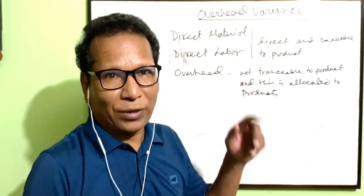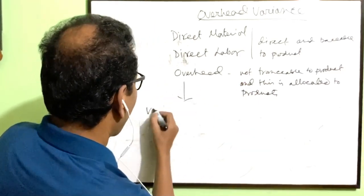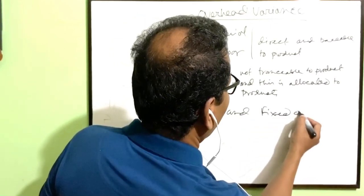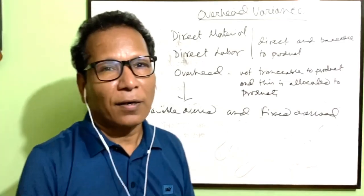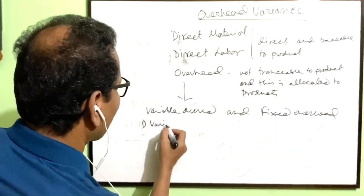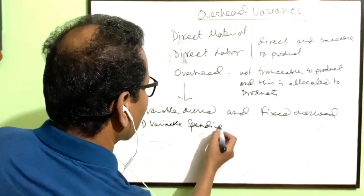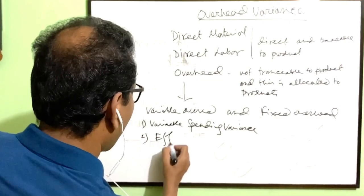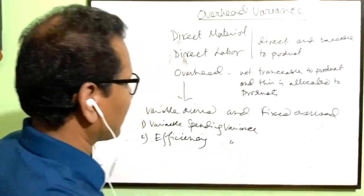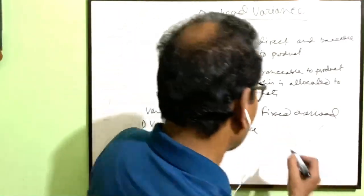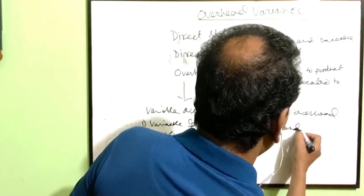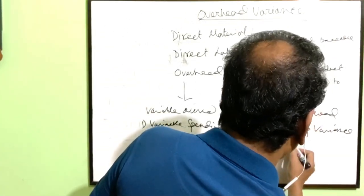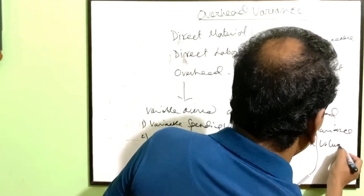Overheads are two types: variable overhead and fixed overhead. There are four types of variances. For variable overhead: one, spending variance; two, efficiency variance. There are two types of fixed overhead variance: one, spending variance; and two, production volume variance.